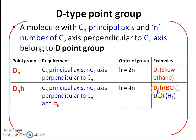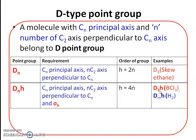Examples of DnH point groups are D3H and D∞H. Boron trichloride belongs to the D3H point group, while hydrogen belongs to the D∞H point group. For D3H, there must be a C3 principal axis, 3 C2 secondary axes at right angles to C3, and a horizontal plane perpendicular to the principal axis.